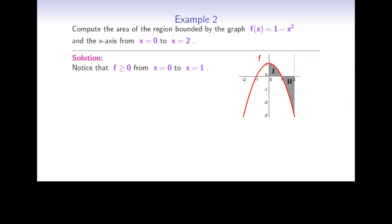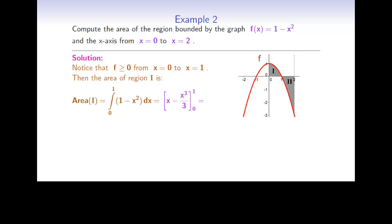f is positive from 0 to 1, and therefore the area of region 1 is given by the integral of 1 minus x squared dx from 0 to 1. We integrate and get x minus x cubed over 3, from 0 to 1. We substitute in the bounds and compute the difference, and end up with 2/3. That's the area of region 1.